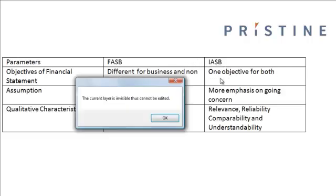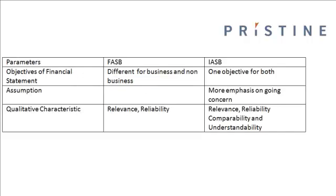Under the International Accounting Standard Board, there is one objective for both. The IASB places more emphasis on the going concern assumption, which means it assumes that the firm will continue to exist unless its management liquidates it. On qualitative characteristics, FASB emphasizes relevance and reliability, whereas IASB focuses on relevance and reliability and additionally comparability and understandability.